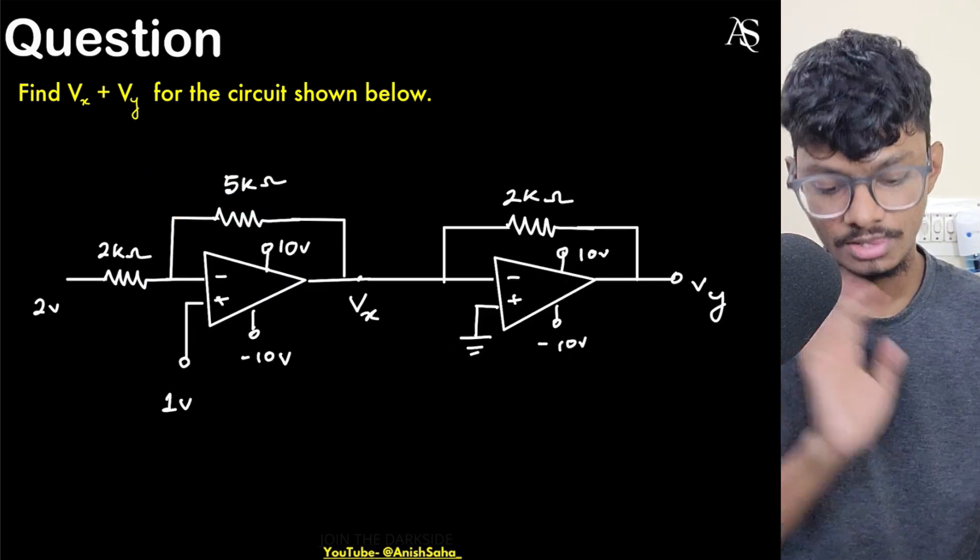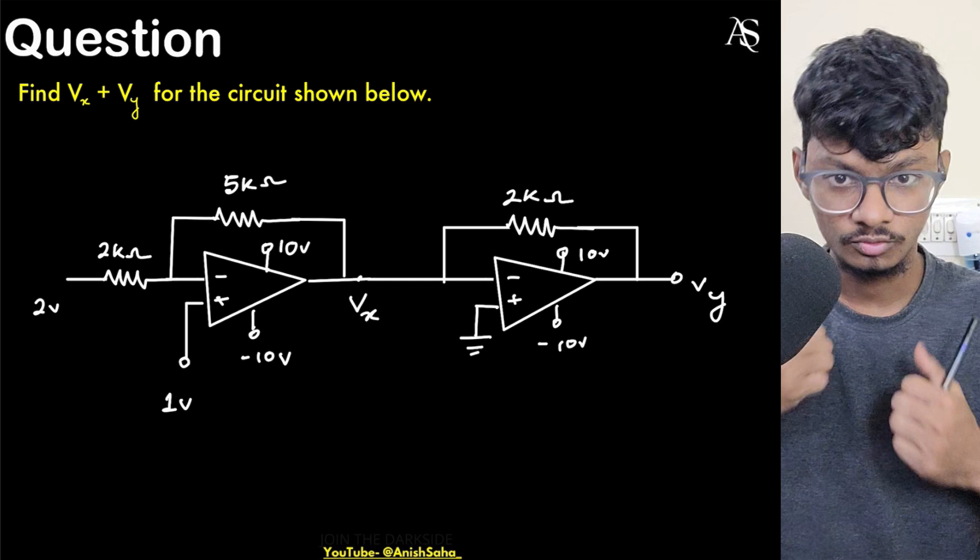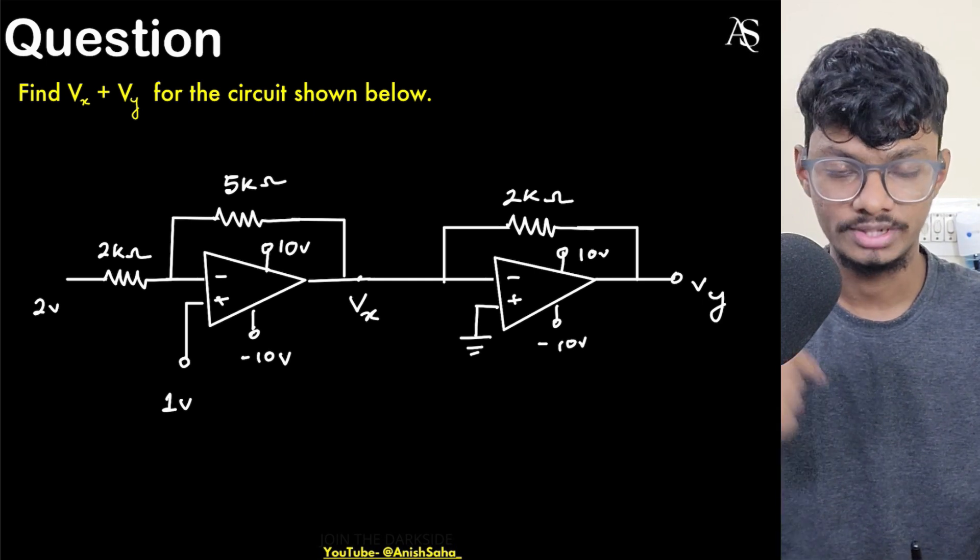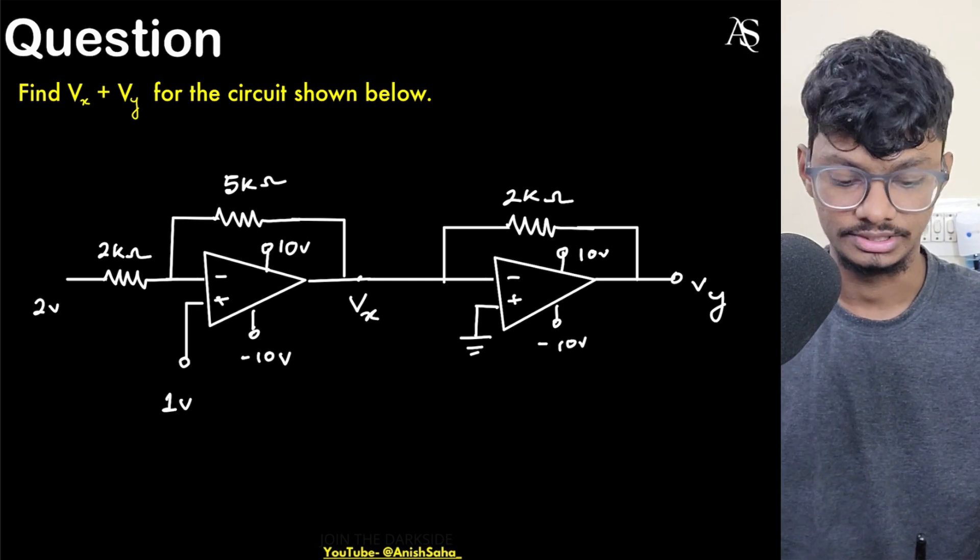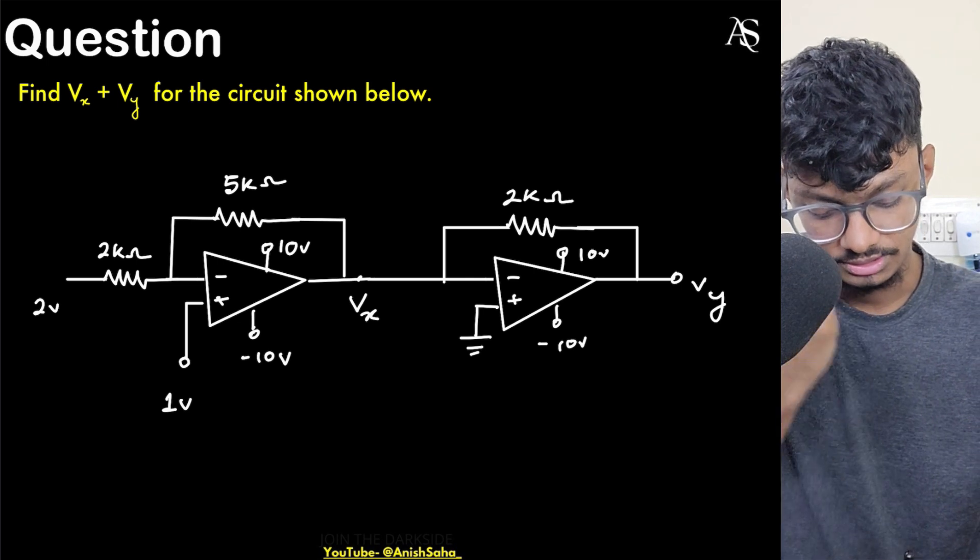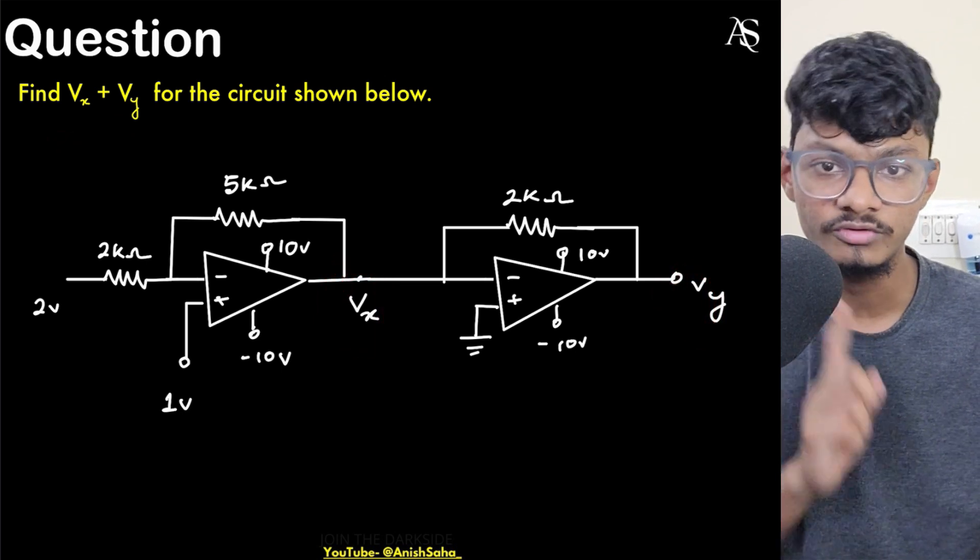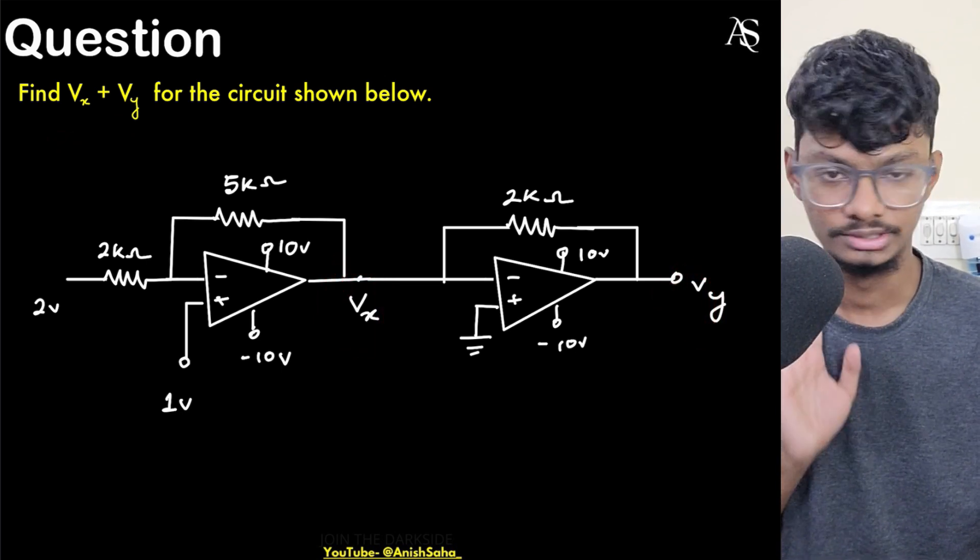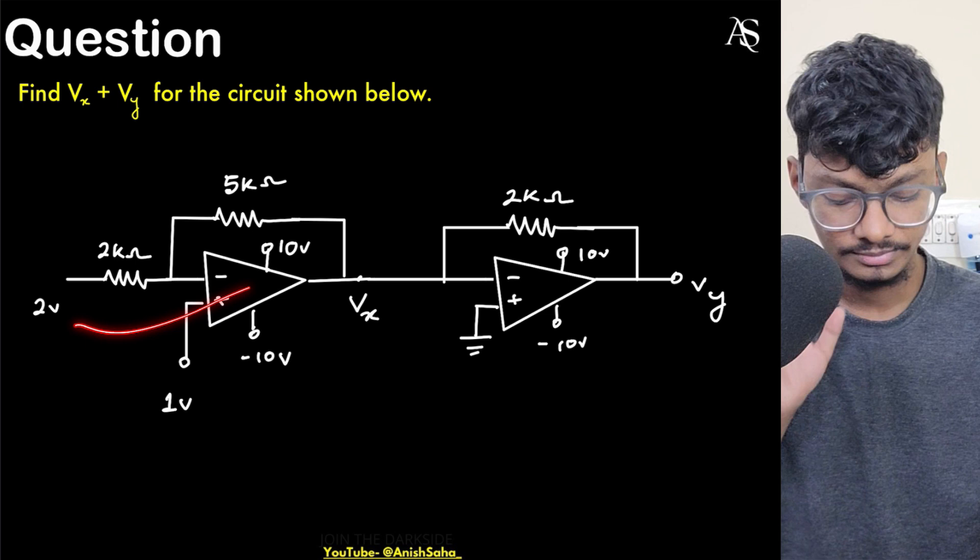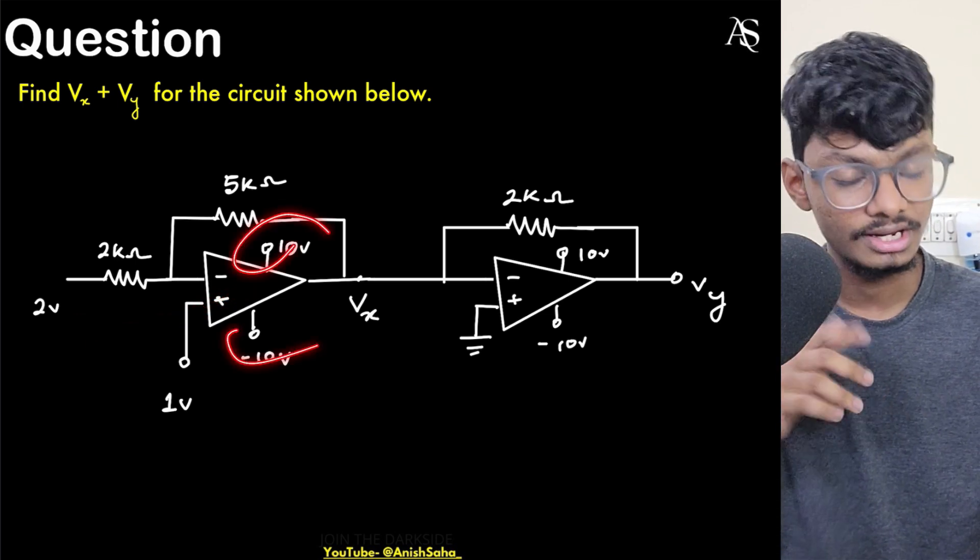If you are preparing for analog VLSI domain, if you want more questions like this, don't forget to hit the like button and subscribe to my channel for getting more videos like this. In this question, the question is pretty simple. You have to find the summation of two voltages that is Vx and Vy that are the output of two op amps in the circuit below.